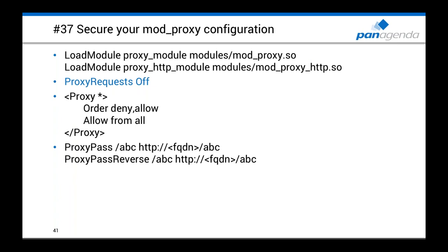Tip 37: Proxy configuration security. When enabling the proxy on an HTTP server (required for OrientMe and other components), configure it securely. It's critical to add 'ProxyRequests Off' to your configuration — without it, you'll have an open forwarding proxy allowing anyone to reach systems behind your HTTP server. Always add 'ProxyRequests Off.'